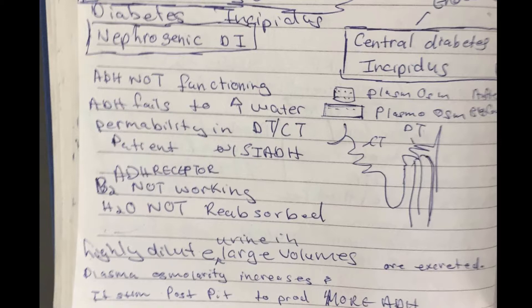Because ADH cannot bind to the V2 receptor, water is not being reabsorbed. As a result, there is highly diluted urine secreted in large amounts, and plasma osmolarity increases. Your body senses it is losing too much water and becomes thirsty, triggering the feedback mechanism to secrete more ADH. But since the body doesn't know the V2 receptors aren't working, it just keeps secreting more ADH.